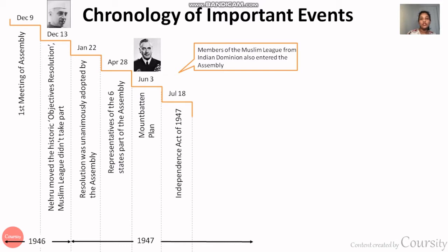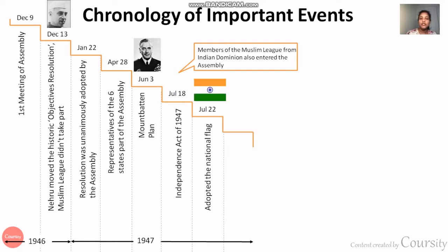After that, what happened to the members of the Muslim League who had also entered the Constituent Assembly? By that time, the Constituent Assembly was restructured. Those who wanted to reside in India remained part of India's assembly, while those who wanted to be part of Pakistan joined the Pakistani side.